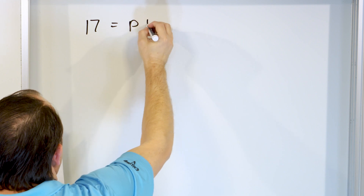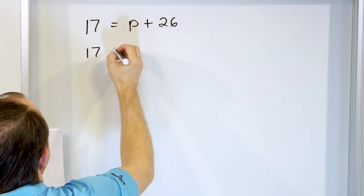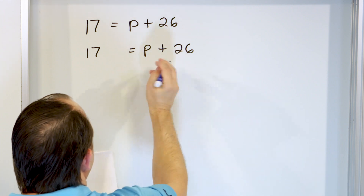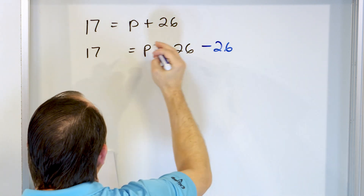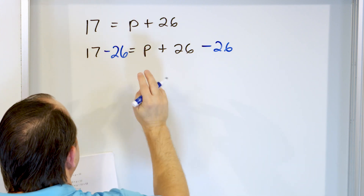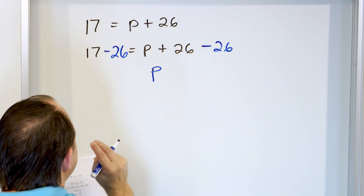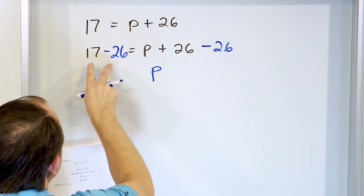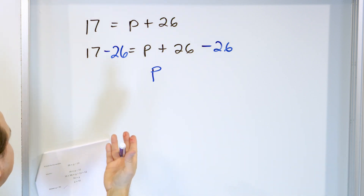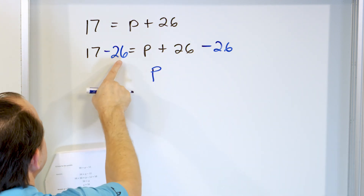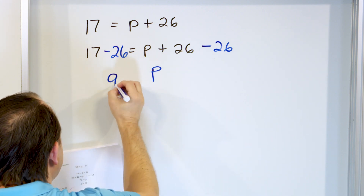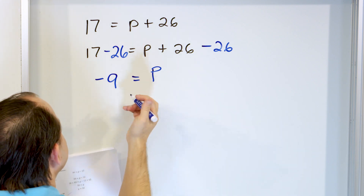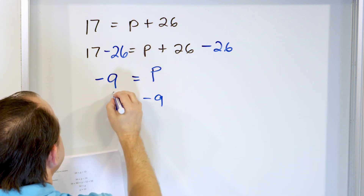Problem 7: 17 is equal to p plus 26. We have adding 26, so we'll subtract 26 from both sides. Here 26 minus 26 goes away, leaving just p. What is 17 minus 26? You can't really do that with normal numbers in the traditional sense, but we now know we can have negative numbers. So just subtract normally: 26 minus 17 is 9, but because the subtraction is backwards, it has to be negative 9. So p is equal to negative 9.